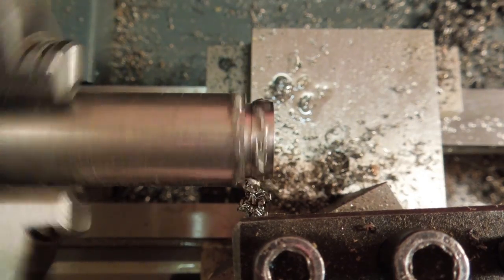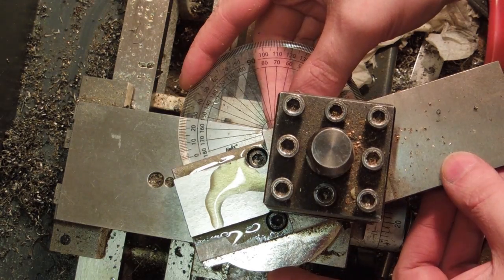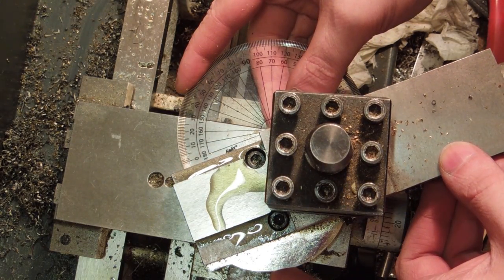This step was going to be threaded, and a relief was needed for the thread to end in. For threading, the compound slide was set at 29 degrees. A 60 degree tool was set, and the change gears were changed to cut a 0.8mm thread pitch.